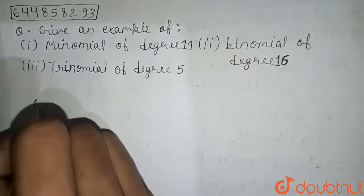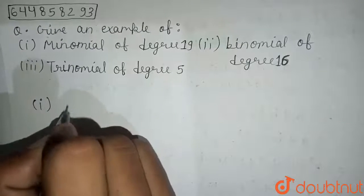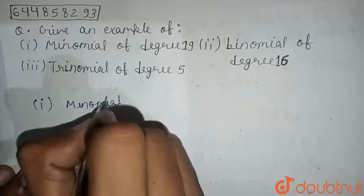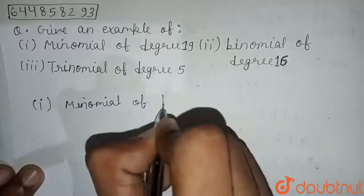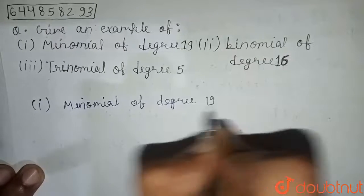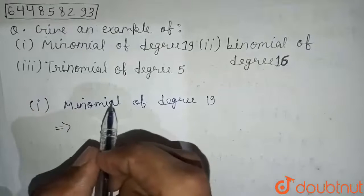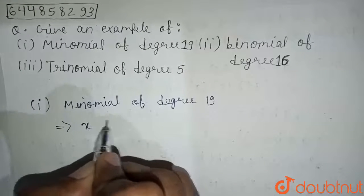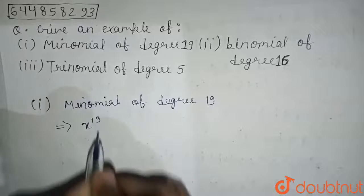So first we will write: monomial of degree 19. What will be the monomial? Monomial means one variable, so we take x to the degree 19, that is power 19.